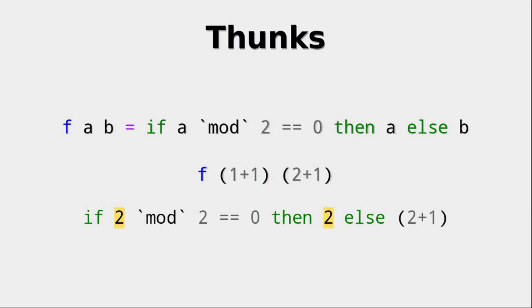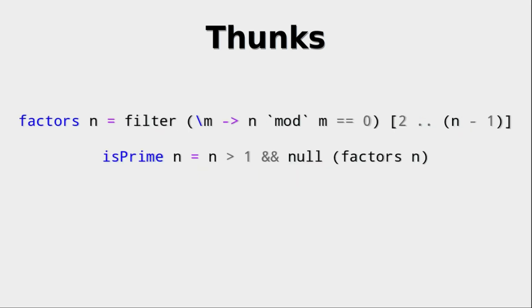So now they're evaluated and they are 2, which is great. And now we see that this condition resolves to true and this means that we can return 2 and just discard 2 plus 1. So the one thunk we never evaluated and we didn't need to, which is great.